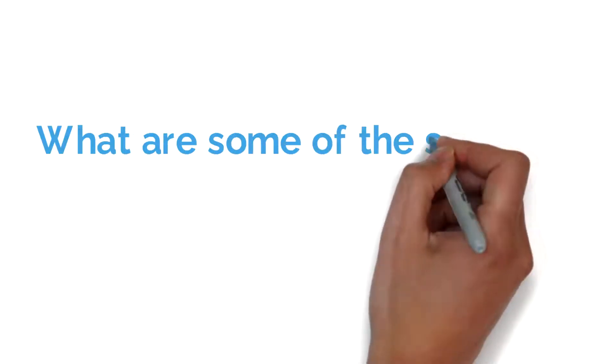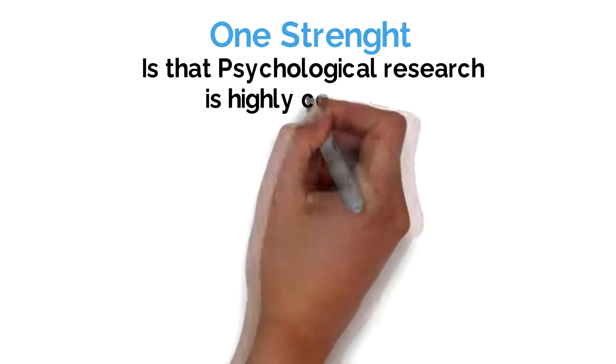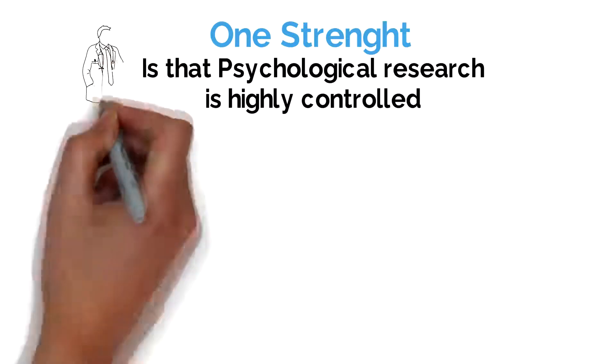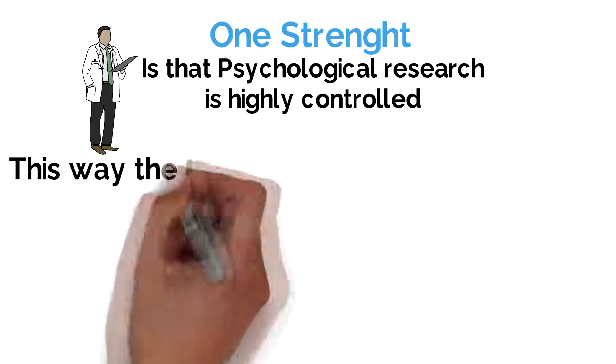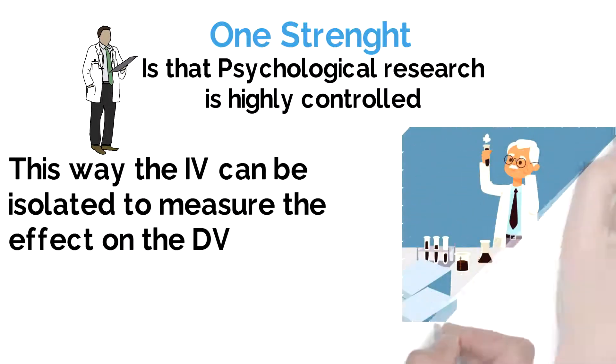What are some of the strengths and limitations of psychology as a science? One of the strengths is that psychological research is often highly controlled, so that the independent variable can be isolated, meaning there are no extraneous variables which allows us to measure the independent variable's effect on the dependent variable.